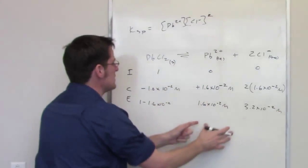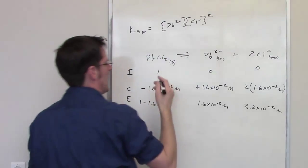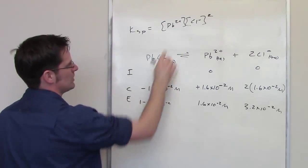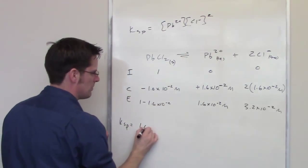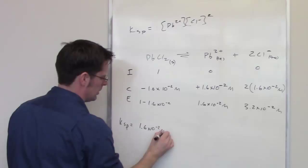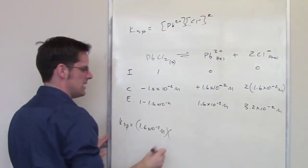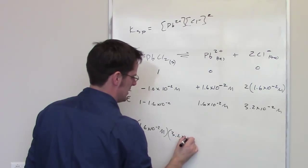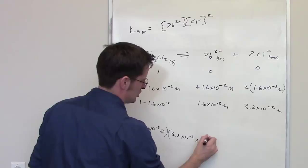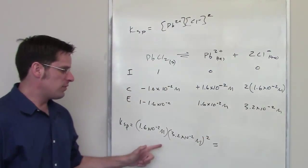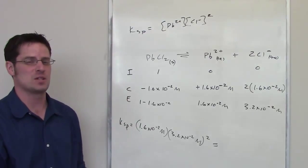Now I take each of these values and put them up into this expression and then solve for it. So Ksp, once again, it's going to be equal to the concentration at equilibrium of lead 2+, which is 1.6 times 10 to the negative 2 molar, multiplied by the concentration at equilibrium of chloride minus, which is 3.2 times 10 to the negative 2, and I guess I can keep the molar in there, and now I'm going to square it. So you solve for that, that will be your final answer for Ksp for this lead chloride solution.